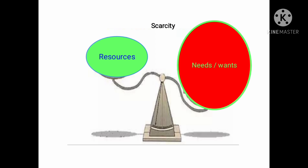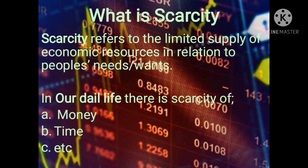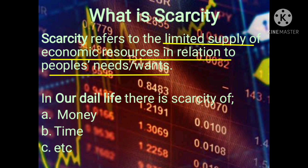Look at the illustration there. We have basically a balance with two arms — one arm having resources and the other arm having the needs, or call them wants. The size of the resources is meager, small, whereas the needs and wants are very many and heavier than the resources. So, what is scarcity? Scarcity refers to the limited supply of economic resources in relation to people's needs or wants.